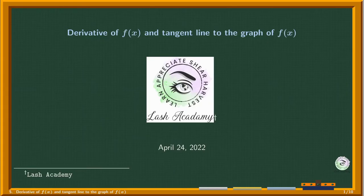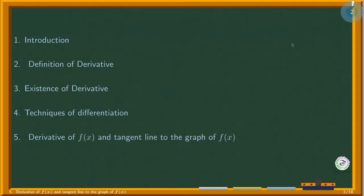We already know that the derivative of f(x) at x equals x₀ gives the slope of the tangent line to the graph of y equals f(x) at x equals x₀. This section will go over problems that revolve around this concept.